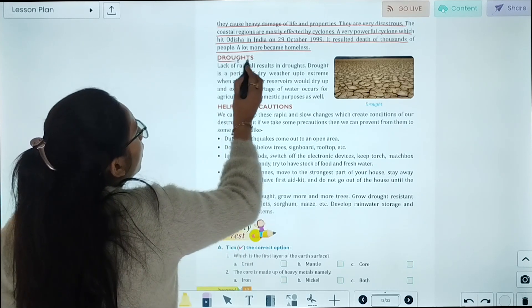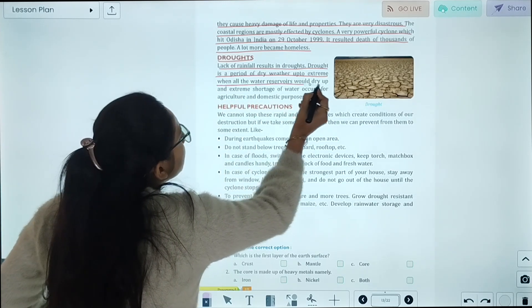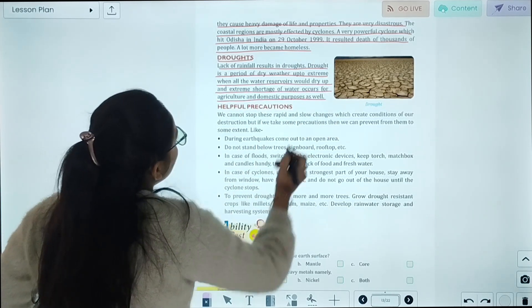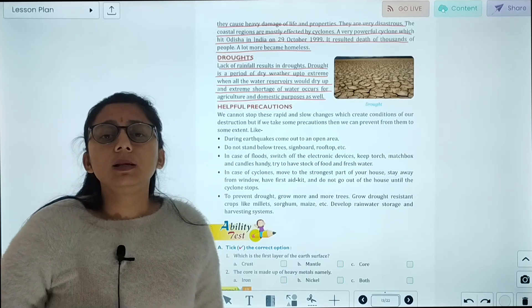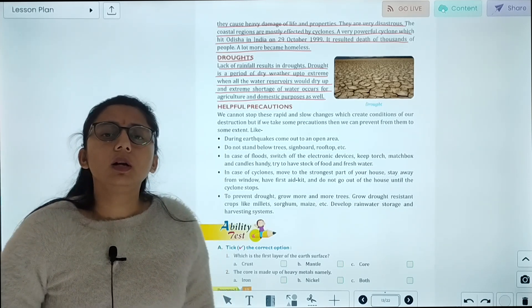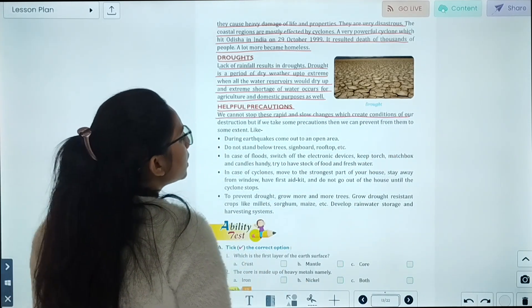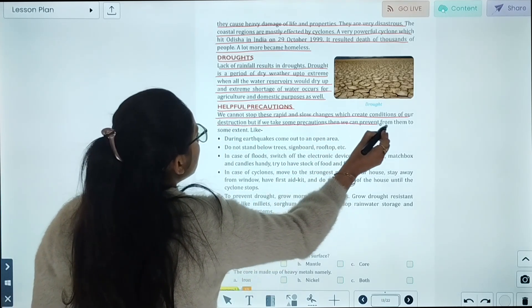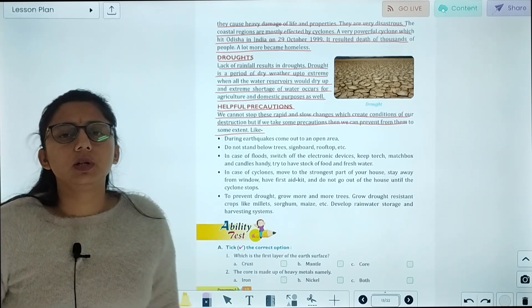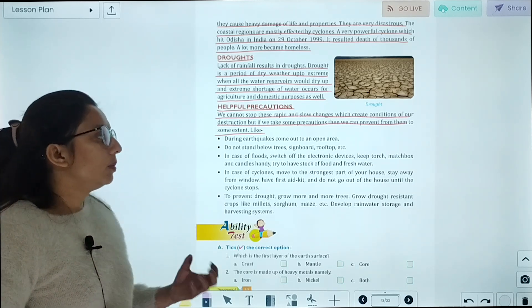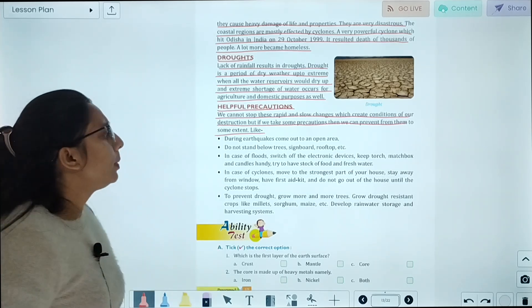Drought occurs when there is an extreme shortage of water for agriculture and domestic purposes. Drought is what happens when there is no water for irrigation or domestic use. We cannot stop these rapid and slow changes which create conditions of destruction, but if we take some precautions, then we can prevent them to some extent.